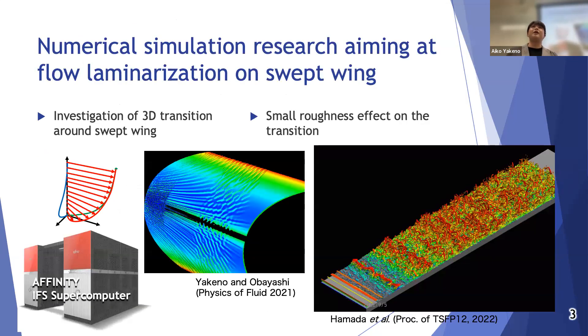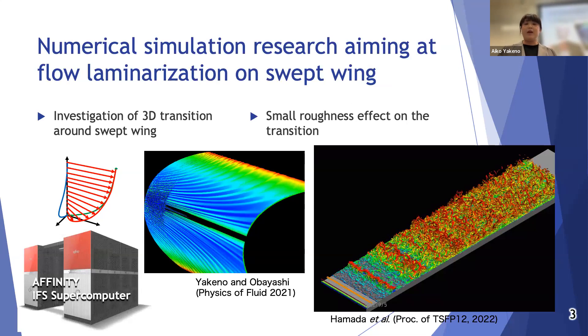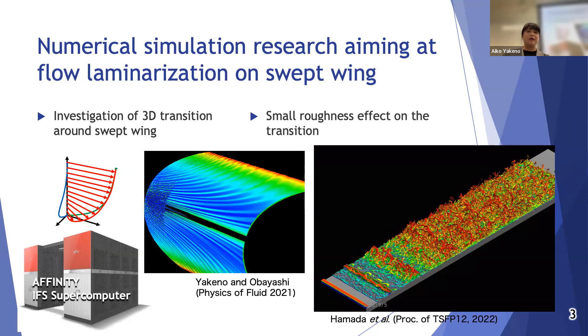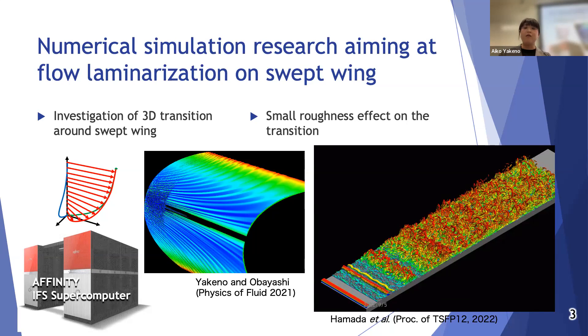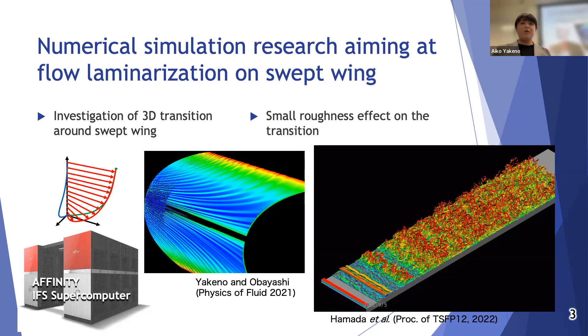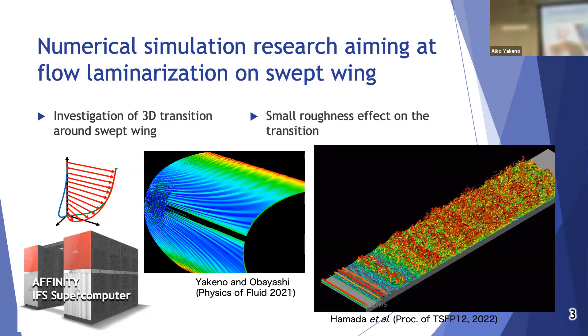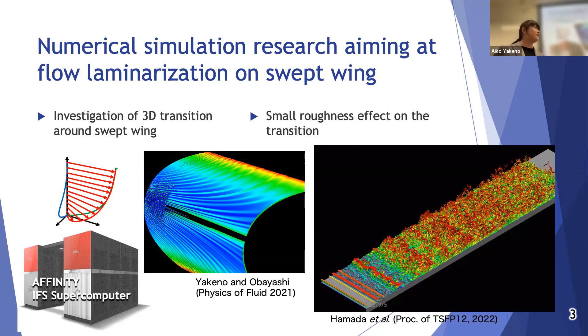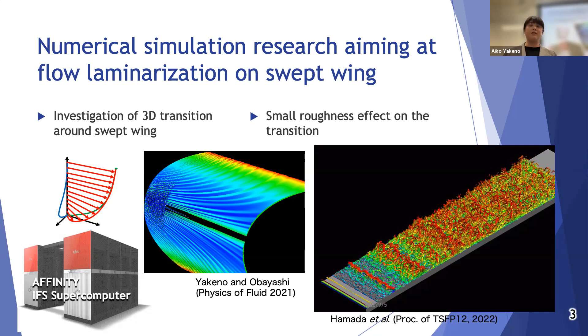One of my research topics now is on drag reduction by schemes such as laminarization. We are working on three-dimensional complex transition mechanism around a swept wing like this simulation, and also small roughness effect on the transitional flow. I will explain this research in more detail in the following slides.